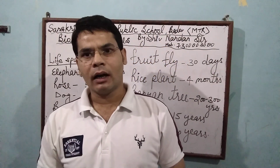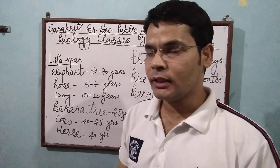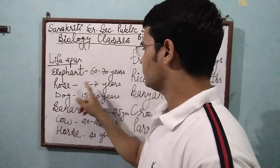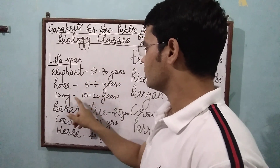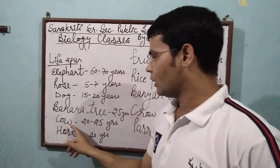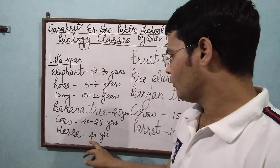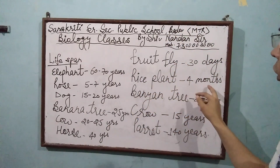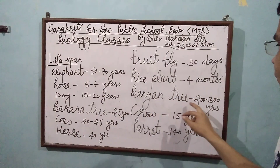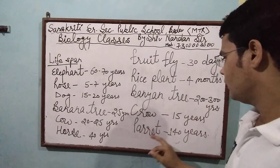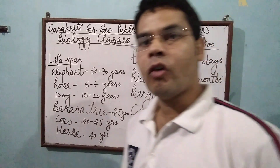Let's talk about different organisms and their life spans. Elephant: 60 to 70 years. Rose: 57 years. Dog: 15 to 20 years. Banana: 25 years. Cow: 25 years. Horse: 40 years. Fruit fly: 30 days. Rice plant: 4 months. Banana tree: 200 to 300 years. Crow: 15 years. Parrot: 140 years.